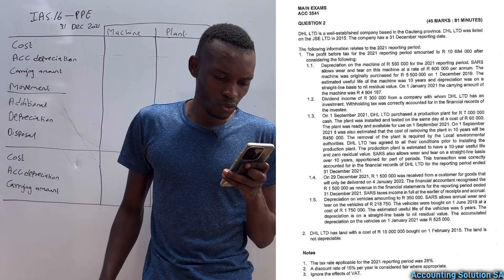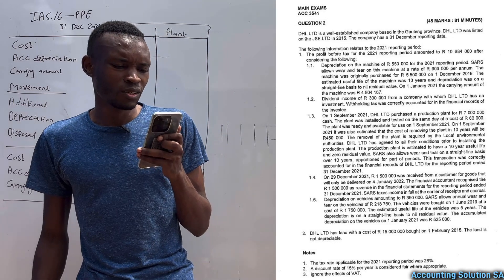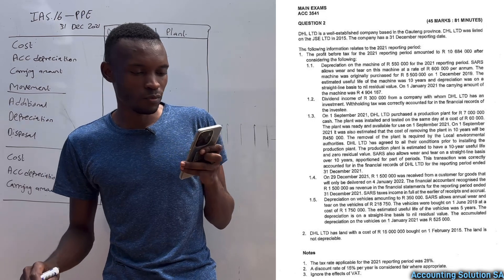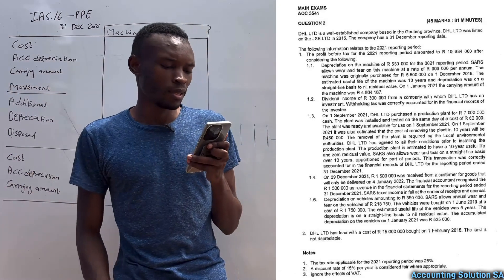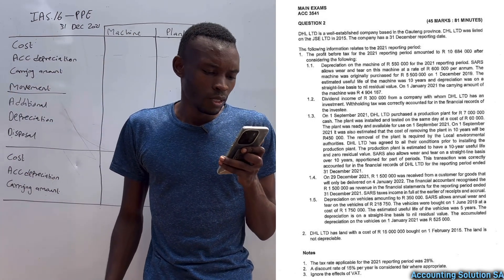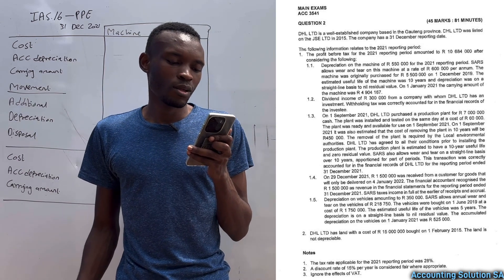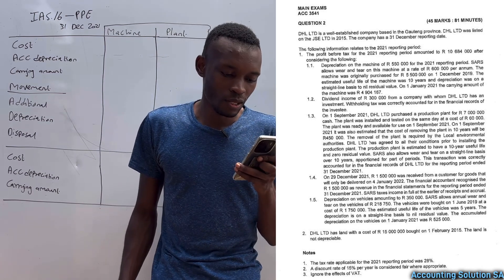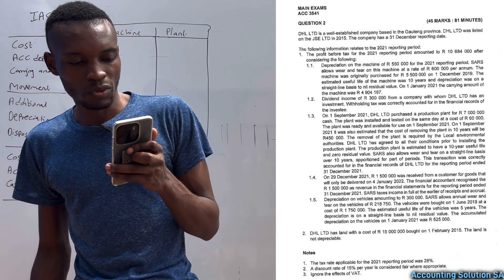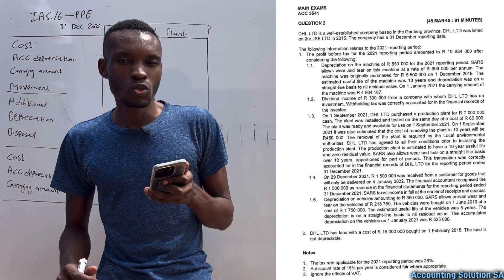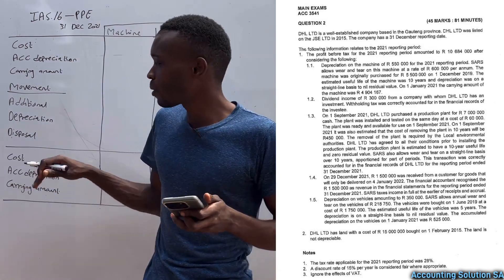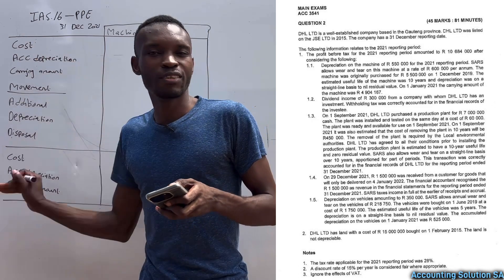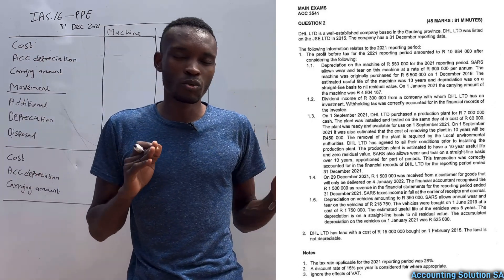The following information relates to the 2021 reporting period. The profit before tax we are not going to use under PPE. For number 1.1, depreciation on the machine is 550,000 for the 2021 reporting period. SARS wear and tear on the machine — when it comes to the PPE note, there is no column for deferred tax, so ignore that. You'll do deferred tax when doing the general.